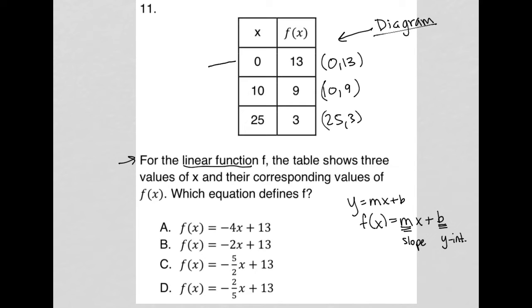So we're actually provided with the y intercept here you have 0, 13 so we know that 13 should be our y intercept and what do we know all of the options have that so that's not going to be helpful in us crossing anything out.